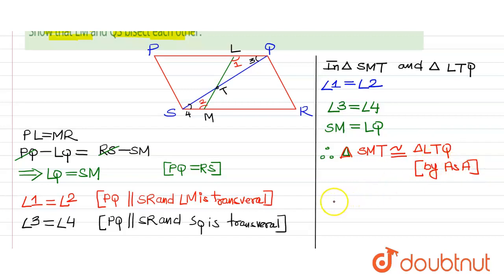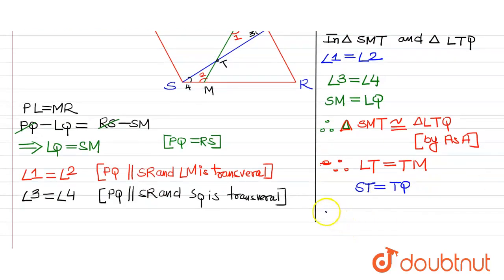Hence, from this we can conclude that LT is equals to TM and ST is equals to TQ. Hence, T bisect.